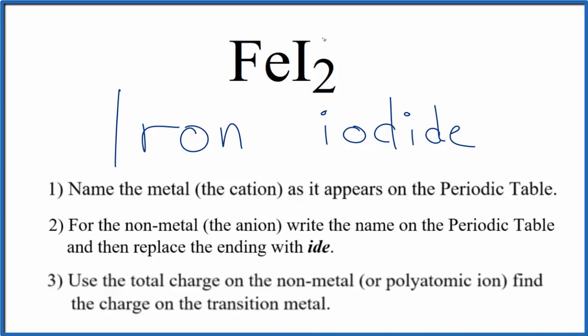We know that iodine, that's in group 17, sometimes called 7A, is 1 minus. We have two of them, that means this adds up to 2 minus, the iron has to be 2 plus. So we're going to write Roman numeral 2 with parentheses right in the middle of the name.